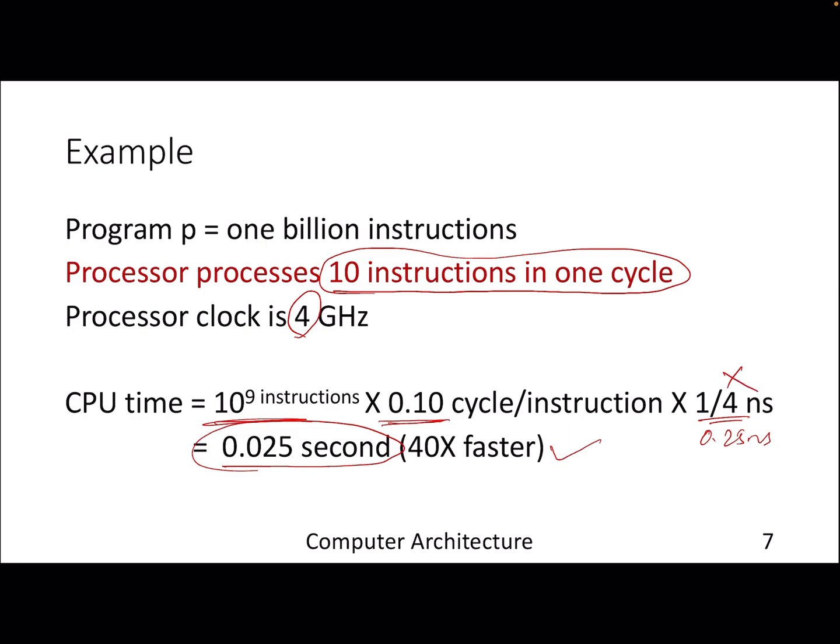It's even faster - it's 40x faster compared to the baseline that we started. What has changed? Instructions haven't changed. Cycle time is constant. Number of instructions remain the same. But now suddenly the processor, if we can build a processor that can execute 10 instructions in one cycle, then we will be able to finish one billion instructions in 0.025 second.